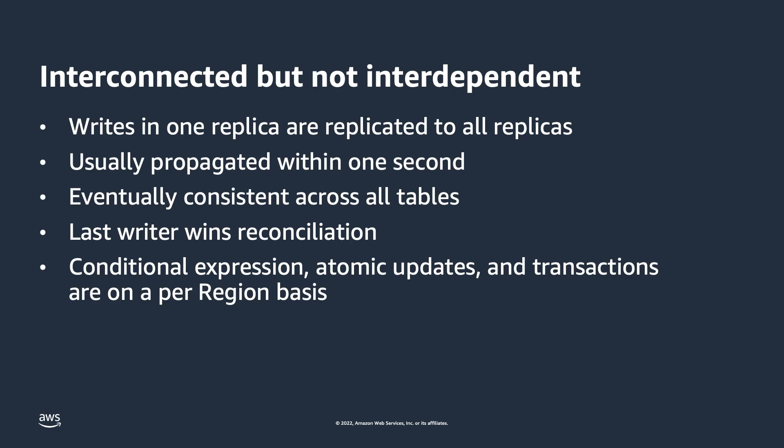Along with this, operations such as conditional expressions, atomic updates, and transactions are on a regional basis. Therefore, think of it like this: data modifications for those local operations will replicate across the global table, but not the operations themselves. For example, if you perform a transact write operation in Region A, those writes will be committed locally as part of that transaction. The data changed by those operations will be replicated to regions B and C, but not written as a transactional operation in those other regions. One thing to note is that with global tables, writes to your table are priced differently as they will be replicated to other replicas in the global table. Instead of a write capacity unit or write request unit, it is a replicated write capacity unit or a replicated write request unit.